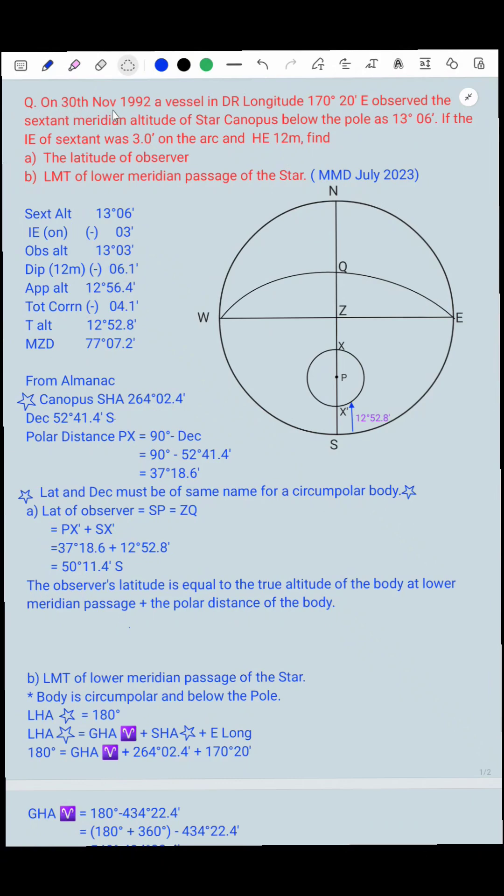On 30th November 1992, a vessel in their longitude 170 degrees 20 minutes observed the lower meridian altitude of star Canopus below the pole as 13 degrees 06 minutes. If the index error of the sextant was 3 minutes on the arc and height of eye 12 meters, find: a) the latitude of observer, b) LMT of lower meridian passage of the star. This question came in MMD exam for shipmate phase 1 July 2023.